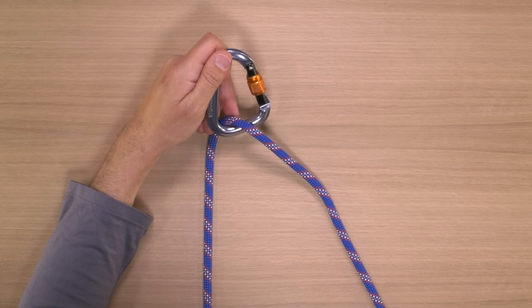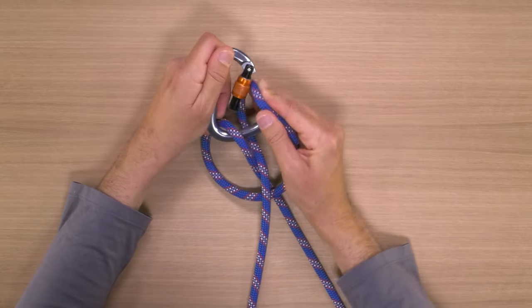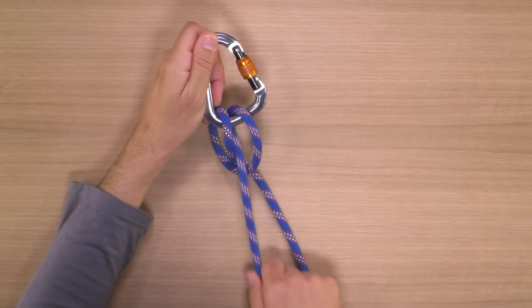Many times I'll tie a clove hitch directly onto a carabiner, rather than tying it in mid-air, especially when I'm tethering myself to an anchor. In which case I pass the rope through the carabiner. Then I take the strand that's coming out the back of the carabiner, twist it across the gate, and pass this new loop through the gate.